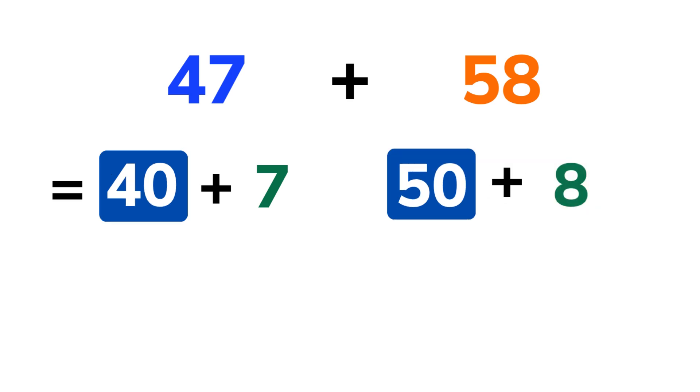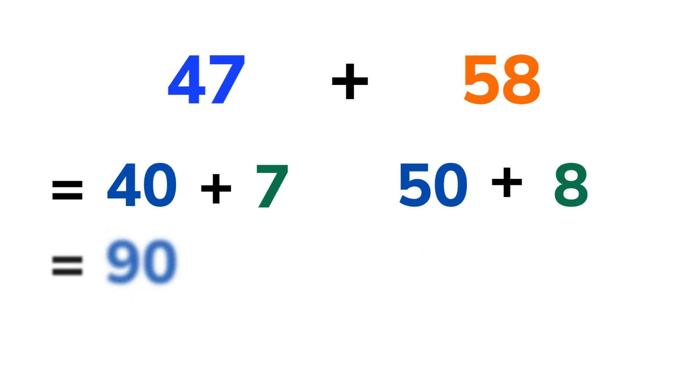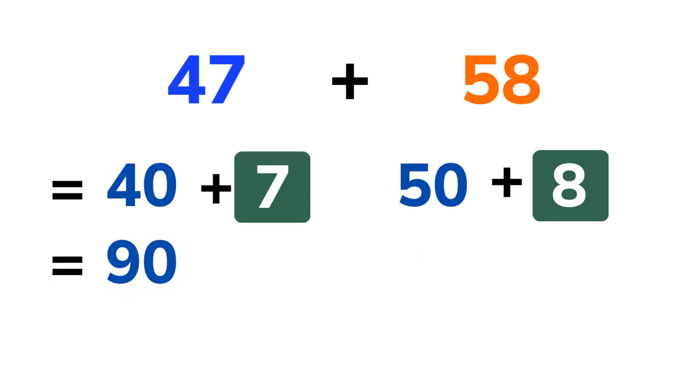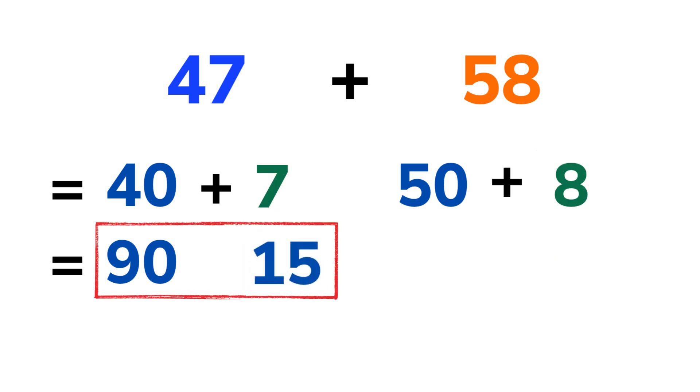Now add the tens first. 40 plus 50 equals 90. Then add the ones. 7 plus 8 equals 15. Now combine both results. 90 plus 15 equals 105. So 47 plus 58 equals 105. See how we manage that?